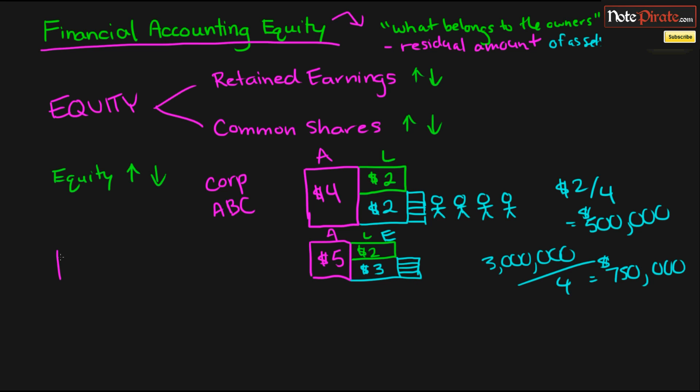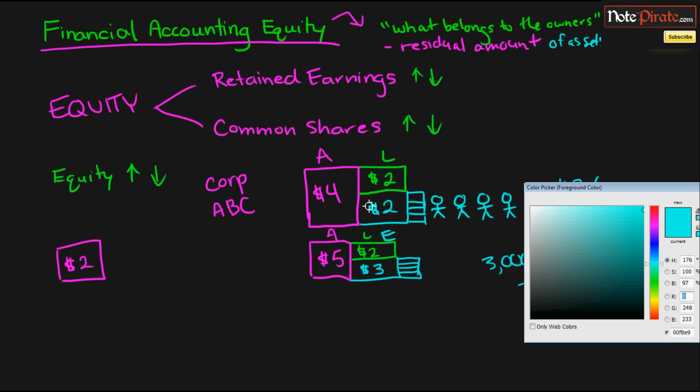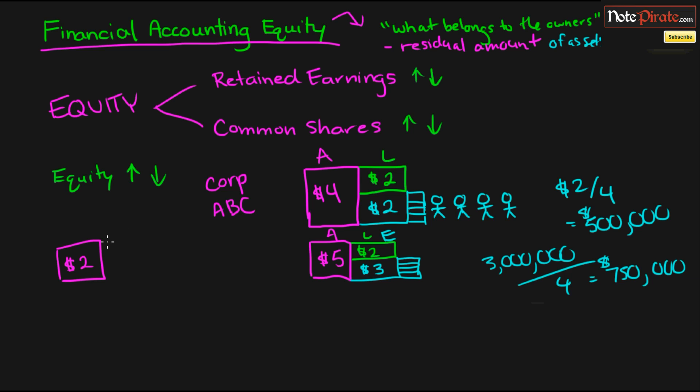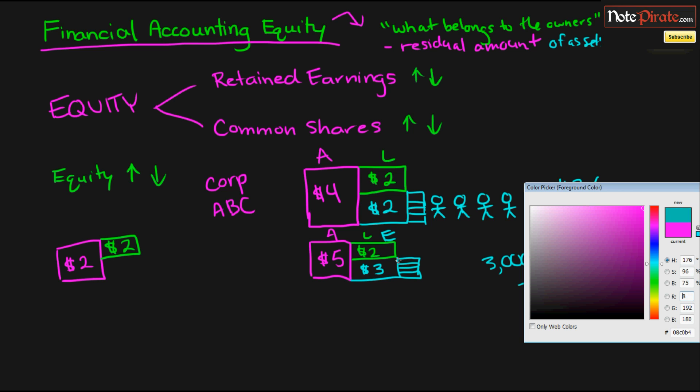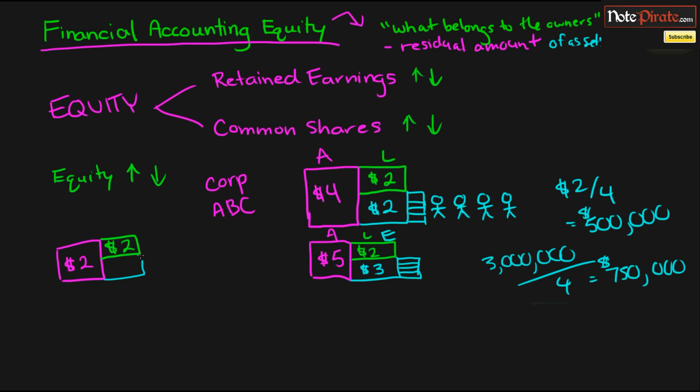One other scenario is if the company is actually performing horribly and they are about to go bankrupt. In this case, if they have $2 million of assets and $2 million of liabilities, then that means there is going to be zero residual assets for the shareholders, which means it doesn't matter what percentage stake they have, they're all going to receive $0 for their shares.